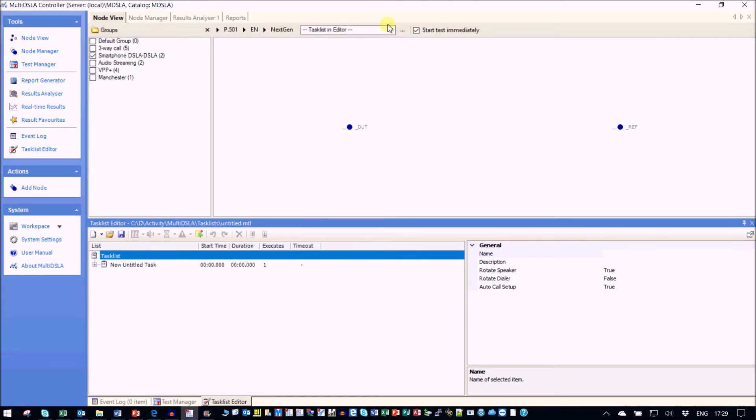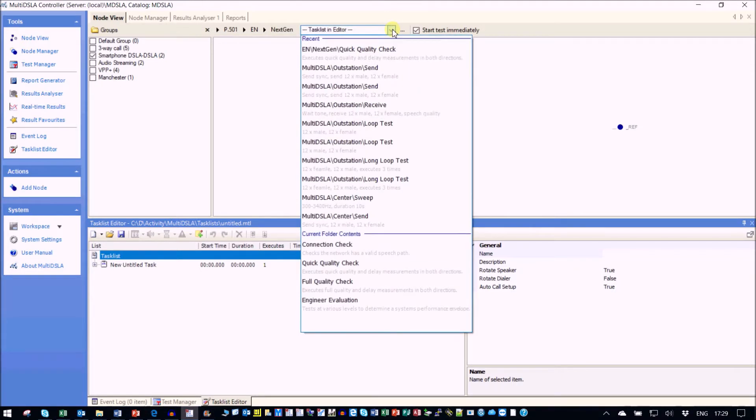Now the dropdown box shows us two things: it shows us recently used tests and, what we're now interested in, the contents of the current folder. Let's choose the quick quality check.